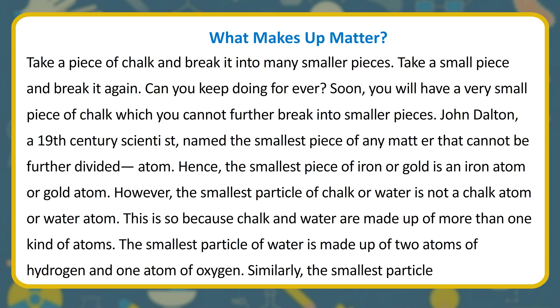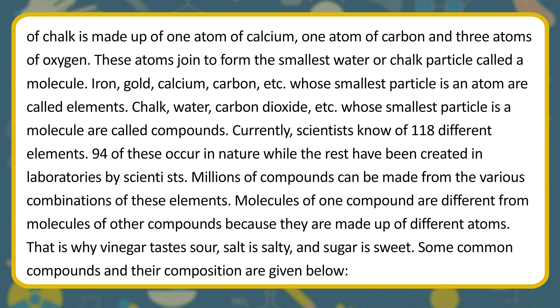The smallest piece of iron or gold is an iron atom or gold atom. However, the smallest particle of chalk or water is not a chalk atom or water atom, because chalk and water are made up of more than one kind of atom. The smallest particle of water is made up of two atoms of hydrogen and one atom of oxygen. The smallest particle of chalk is made up of one atom of calcium, one atom of carbon, and three atoms of oxygen. These atoms join to form the smallest water or chalk particle, called a molecule.